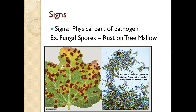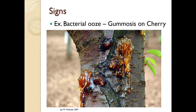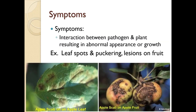Signs are the physical part of a pathogen. Here we have fungal spores on a rust on tree mallow. This is a bacterial disease — gummosis on cherry — and this is a sign. Symptoms represent the interaction between the pathogen and the plant. You would have leaf spots, puckering, lesions on fruit. This is apple scab: on the left you have it on the leaf and on the right on the fruit.